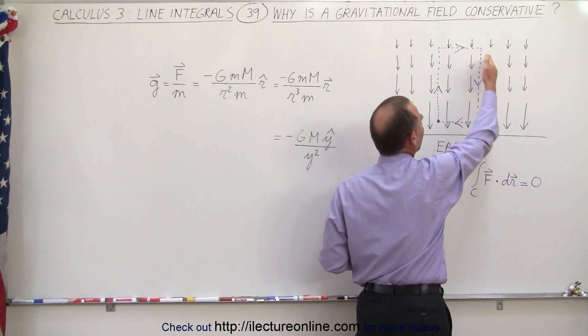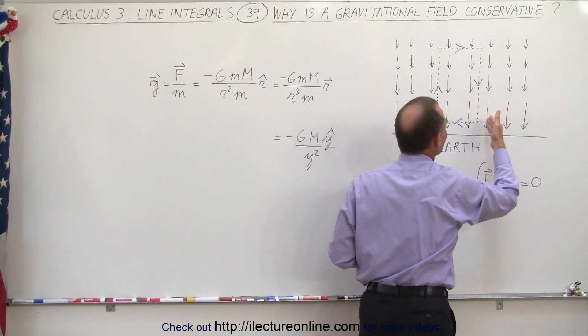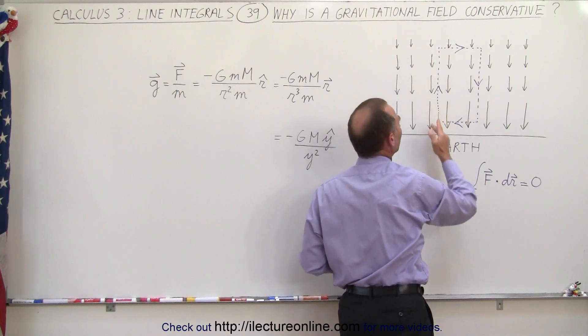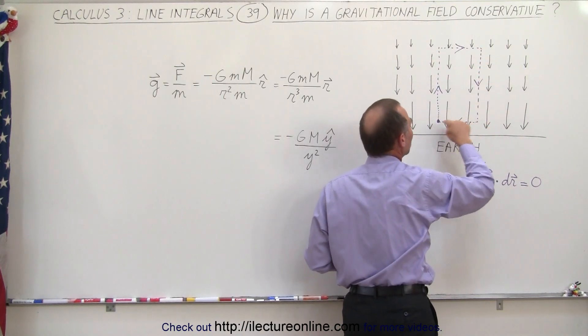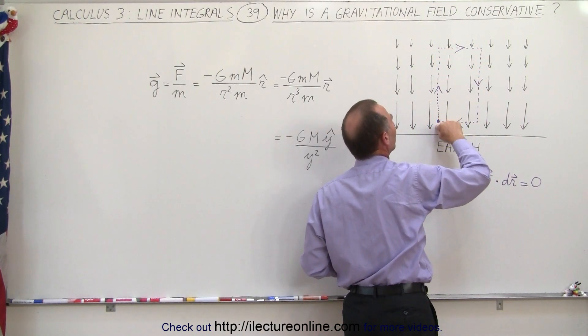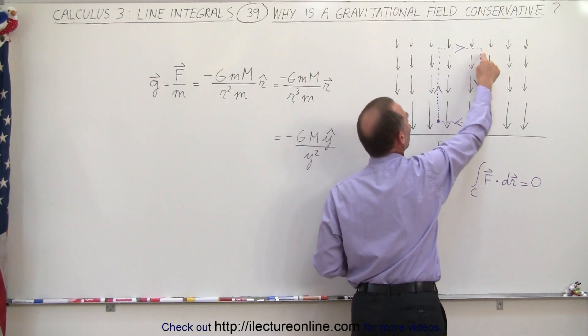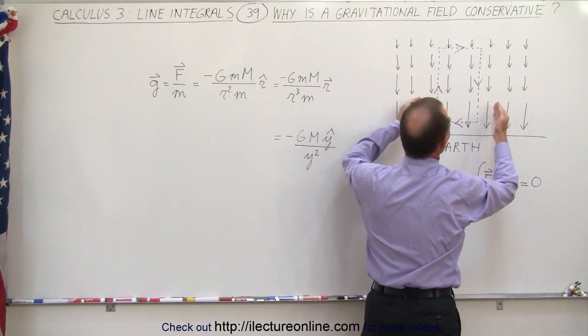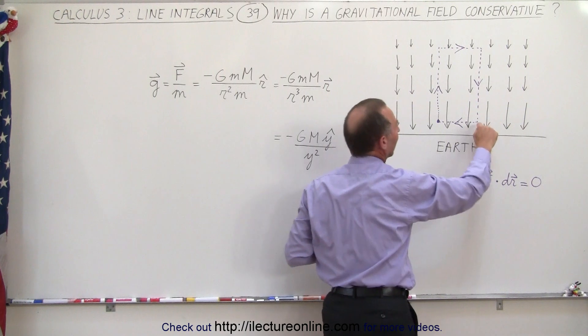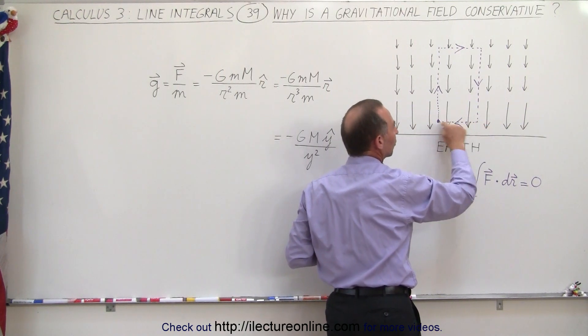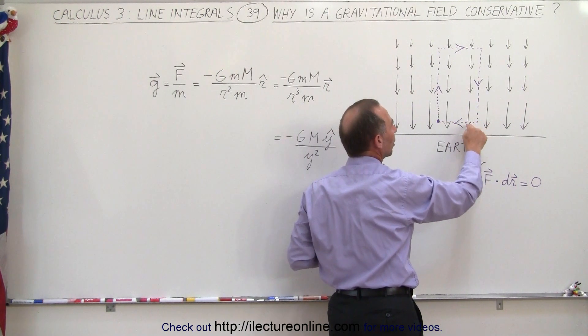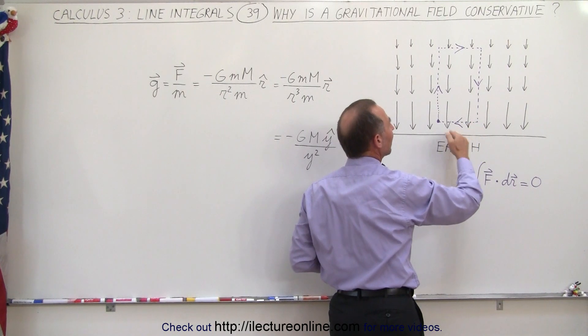Notice that the magnitude of the field here is the same as the magnitude of the field here, but here we're traveling in the opposite direction compared to here. So whatever we were subtracting here, we're going to be adding here; it's going to be the same amount. They're going to cancel each other out, and then traveling perpendicular again to the field, there is no contribution at all—that will be zero.